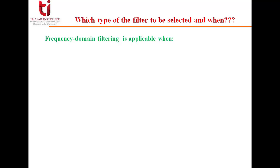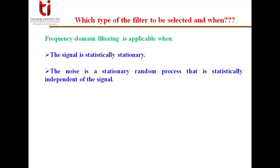Now frequency domain filtering is applicable when the signal is statistically stationary. The noise is a stationary random process that is statistically independent of the signal. The signal spectrum is limited in bandwidth compared to that of the noise or vice versa.